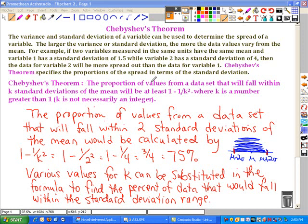Chebyshev's theorem specifies the proportions of the spread in terms of the standard deviation. Chebyshev's theorem states that the proportion of values from a data set that will fall within k standard deviations of the mean will be at least 1 minus 1 over k squared, where k is a number greater than 1, but it's not necessarily an integer.